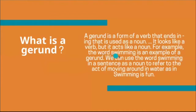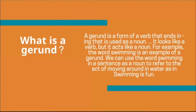For example, the word 'swimming' is an example of a gerund. Swimming can be a progressive or continuous form of a verb. But we can also use the word 'swimming' in a sentence as a noun — to refer to the act of moving around in water — as in 'Swimming is fun.' In this sentence, swimming is not used as a verb; it was used as a noun. So even if it looks like a verb, it was used as a noun.